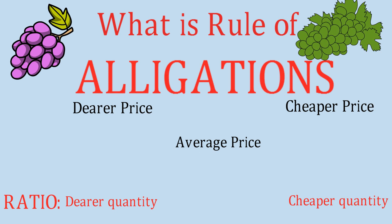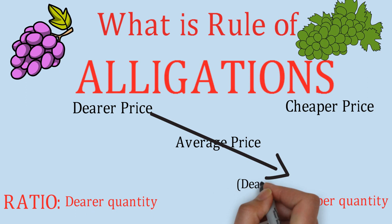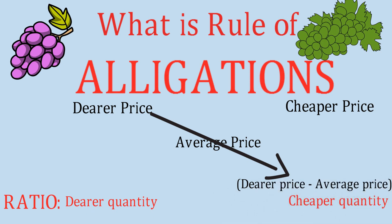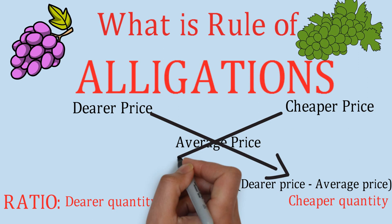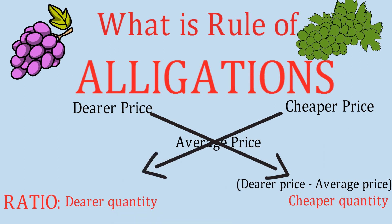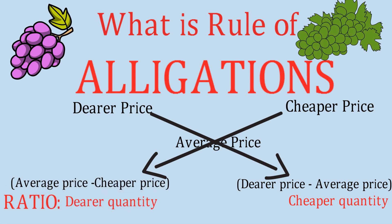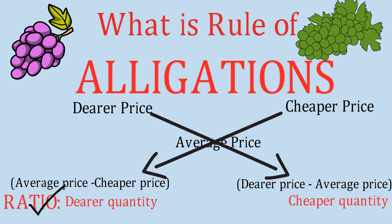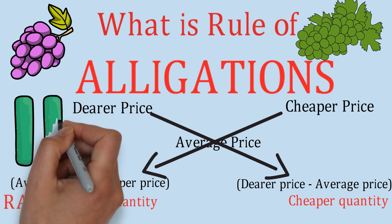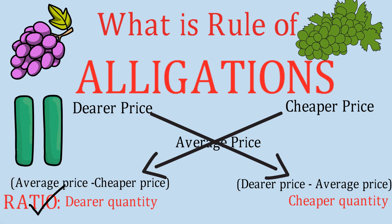How can it be done? It is a very simple rule: draw a diagonal arrow from the dearer price crossing the average price, giving dearer price minus average price — this gives the cheaper quantity ratio. Similarly, draw an arrow from the average price crossing the cheaper price, giving average price minus cheaper price — this gives the dearer quantity ratio. So: dearer quantity corresponds to (average price − cheaper price) and cheaper quantity corresponds to (dearer price − average price).